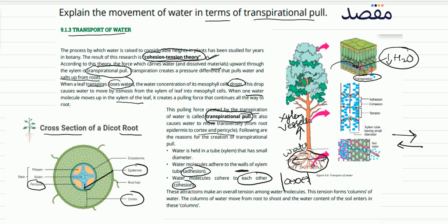These attractions make an overall tension among water molecules. These attractions are due to adhesion and cohesion. The water molecules create tension, forming continuous columns that move from the roots to the shoot. Water content from the soil enters these columns of xylem vessels, creating a continuous pathway from roots to stem and shoot.